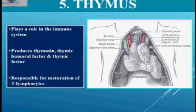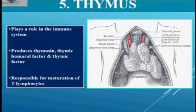In this section of the presentation we will be studying about the fifth gland, that is thymus. Thymus plays a role in the immune system. It produces thymosin, thymic humoral factor and thymic factor, and it is responsible for maturation of T lymphocytes. Thymus gland plays an important role in the development of a normal healthy immune system. It is involved in the selection of lymphocytes, which are a subset of white blood cells.